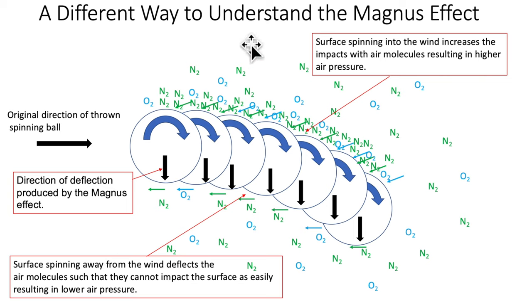This is my way of looking at this. You've got a spinning ball here moving and it's being deflected due to the Magnus force being put on it. The direction of the thrown ball is this way and the Magnus force is that way. It's rotating, in this case clockwise. The surface spinning into the wind increases the impact of air molecules resulting in higher air pressure. That to me, for myself anyway, intuitively seems to make sense.